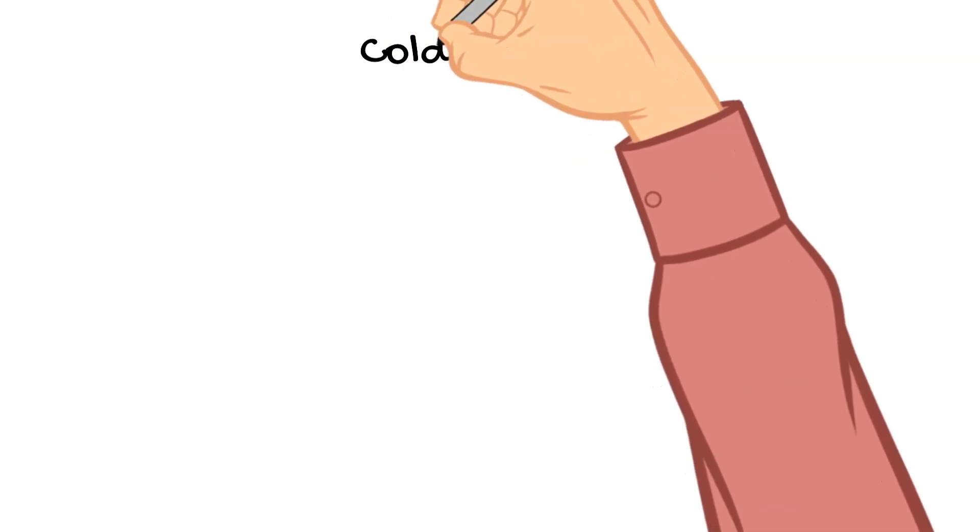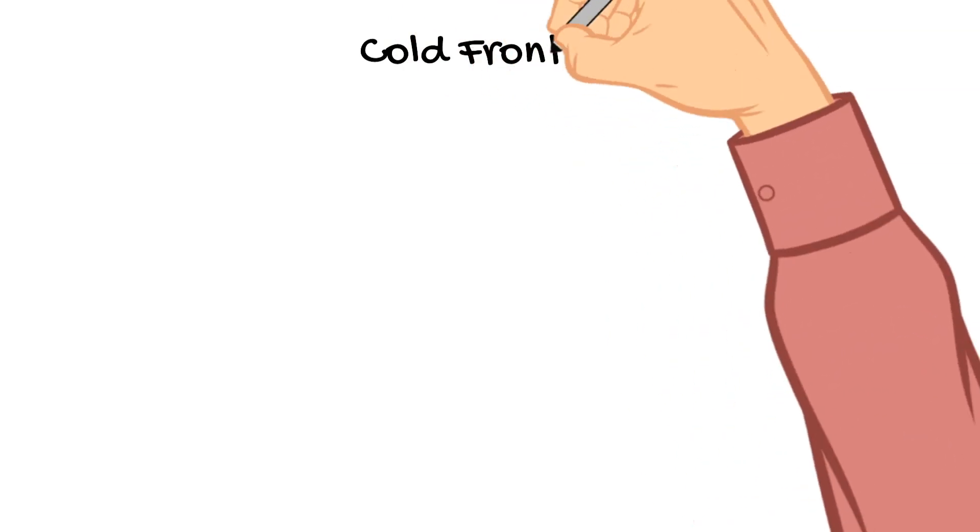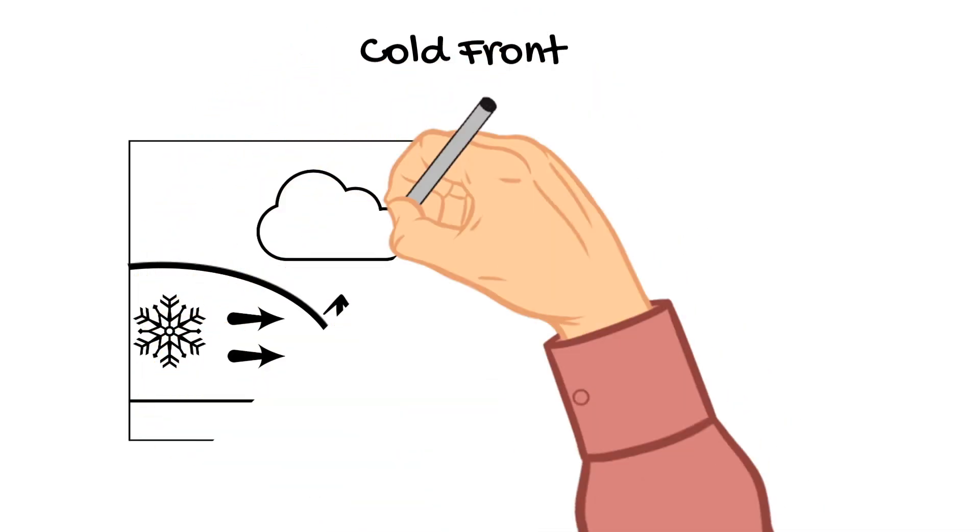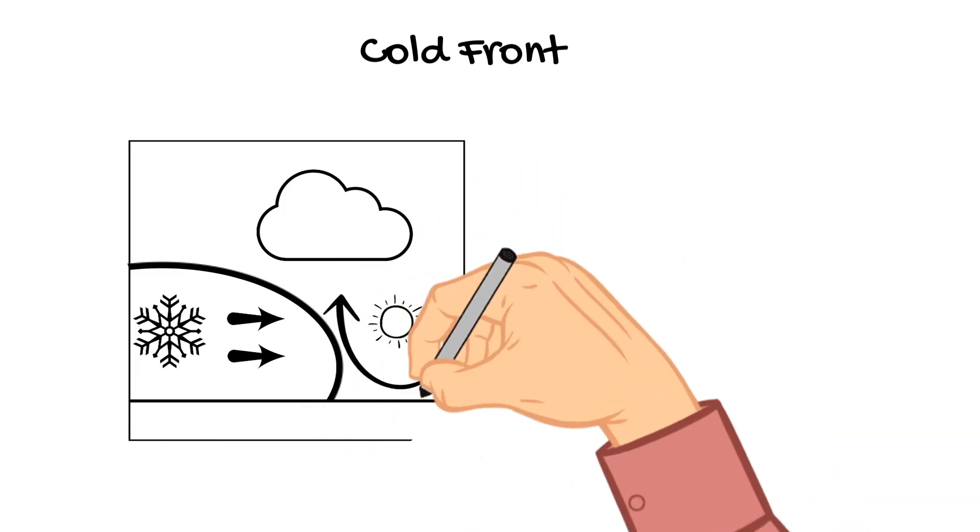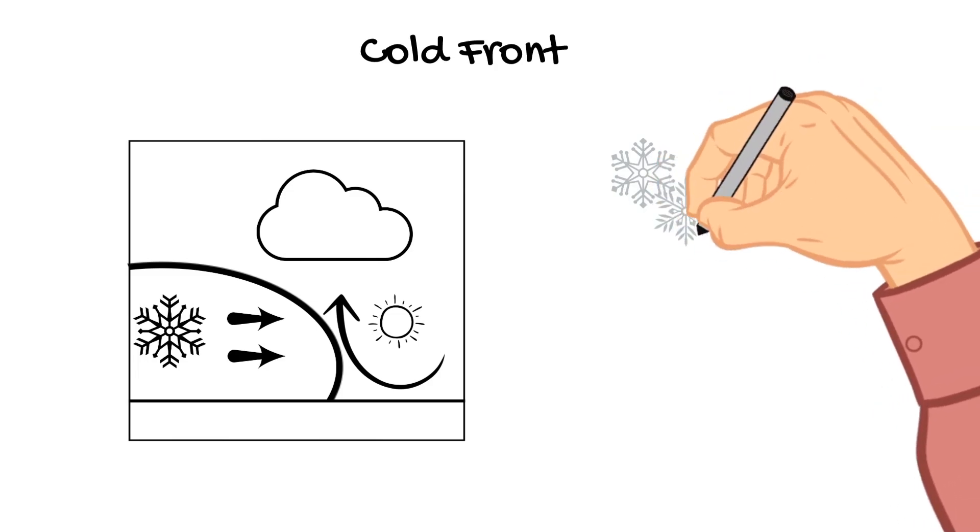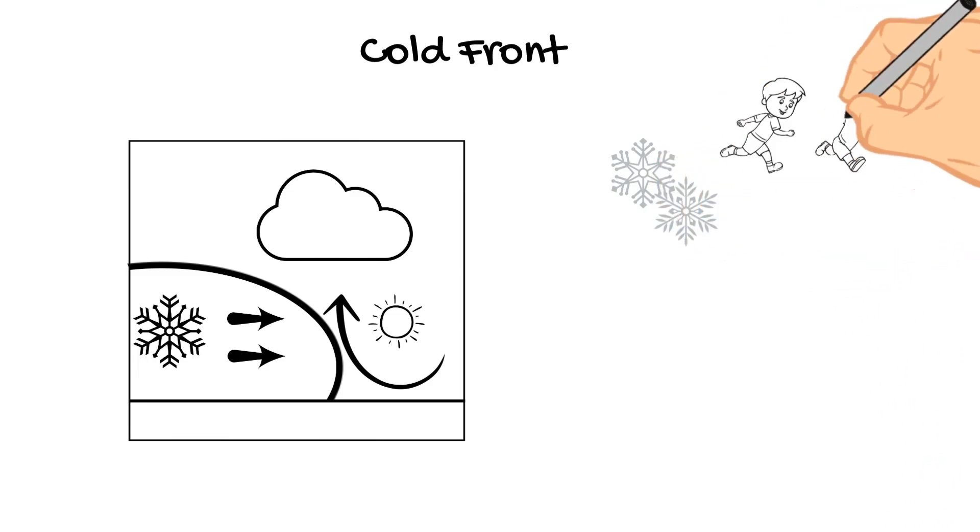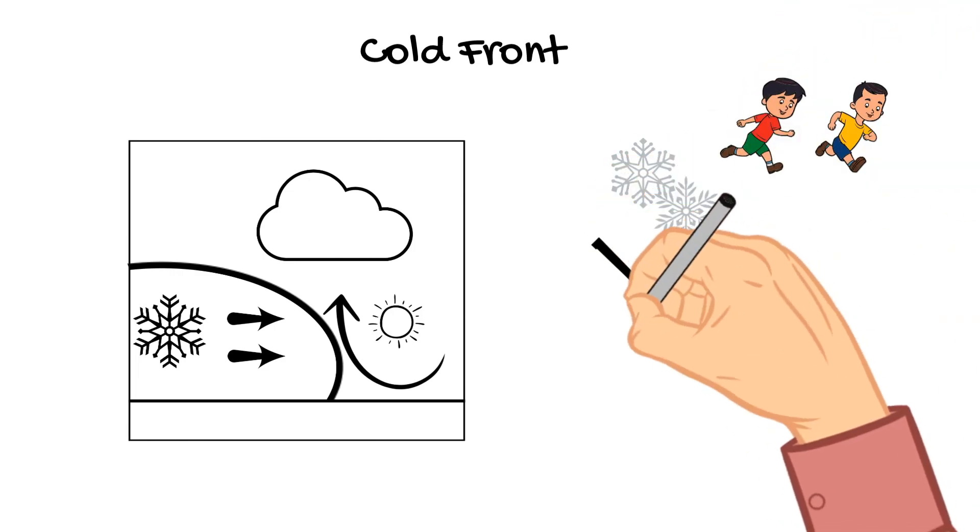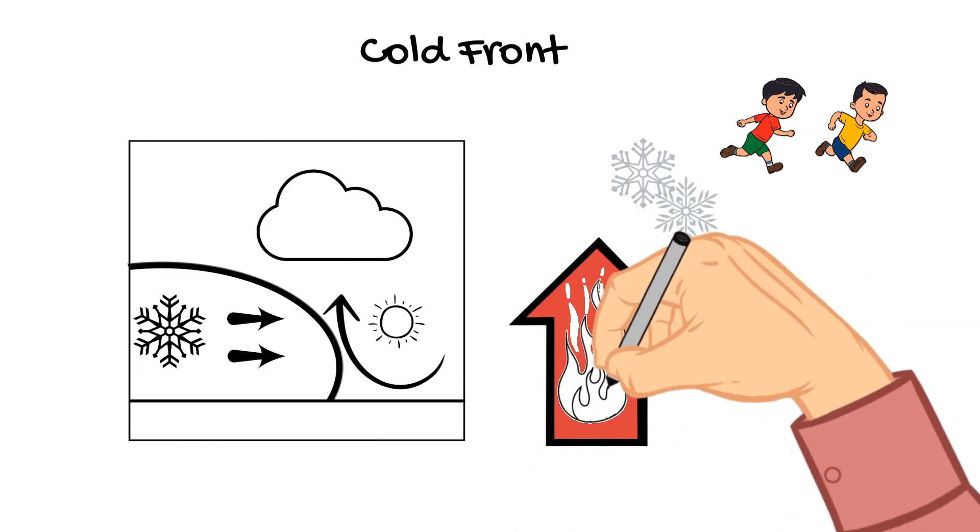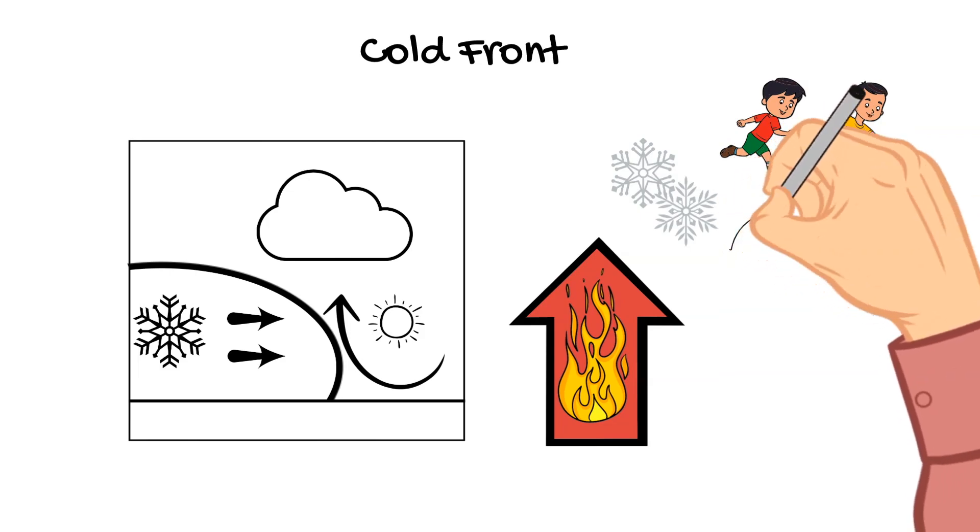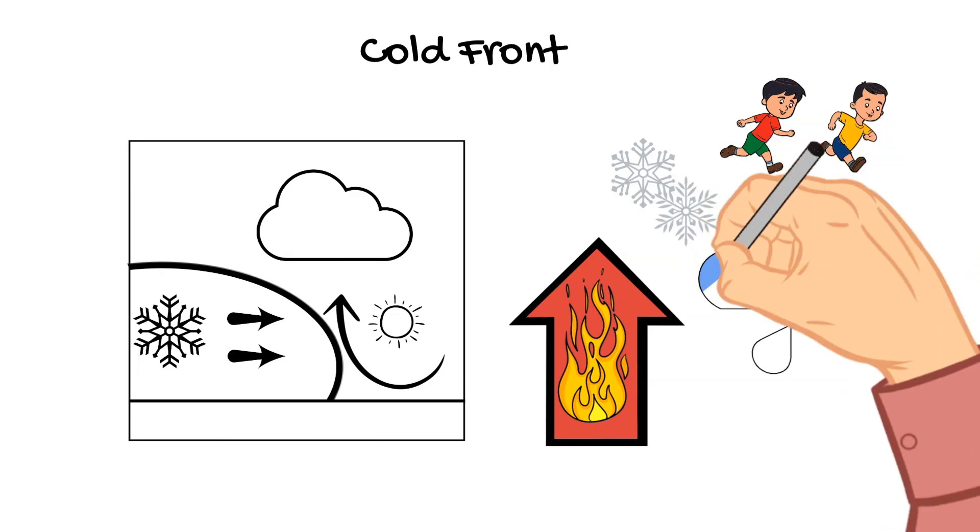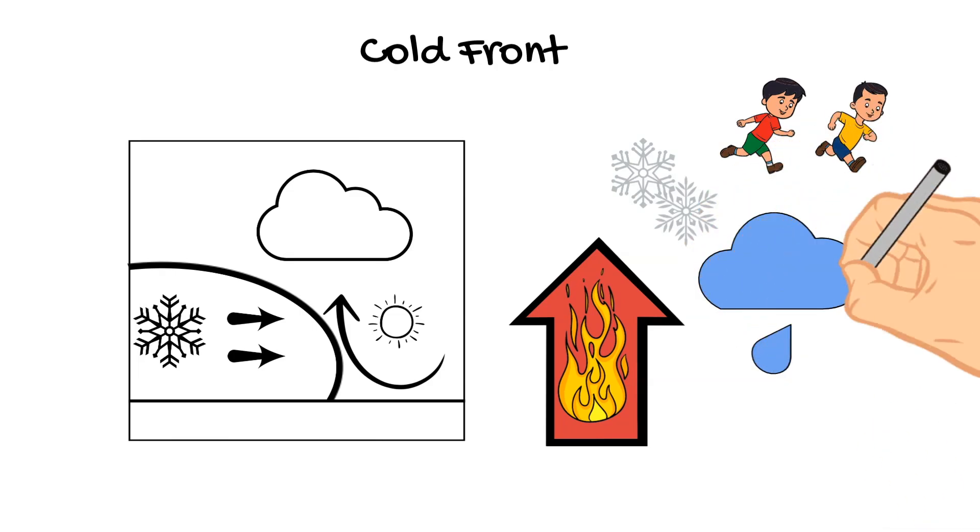So, let's jump into the first type of weather front, and that is a cold front. Now, a cold front forms when there is a cold air mass that runs into a warm air mass. The cold air mass is moving much faster than the warm air mass, and so the cold air mass will lift the warm air mass out of its way. As this warm air mass rises, the water vapor in it condenses, and because of this, clouds can form and precipitation can fall.